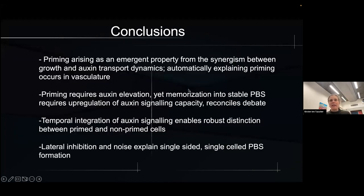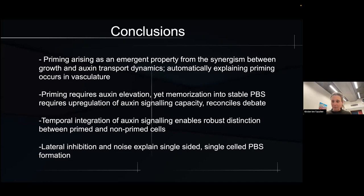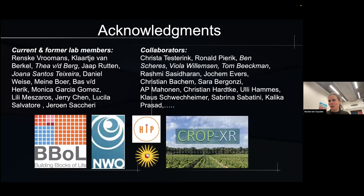In conclusion, we think priming is an emergent property arising from the interplay between growth and auxin transport. Vasculature cells, being the most narrow, profit most from periodic variations in cell size and show the clearest signal. Priming itself requires auxin, while memorization requires upregulation of auxin signaling, reconciling a prior debate in the field. Temporal integration of auxin — as in phyllotaxis patterning — enables robust distinction of which cells should form a lateral root, and with lateral inhibition and noise the full patterning process can be explained. I'd like to thank everyone who has been or is in my lab and my collaborators.